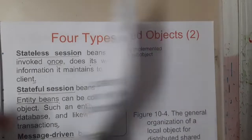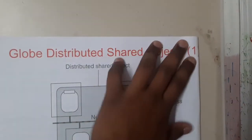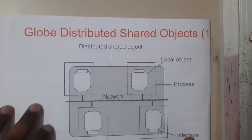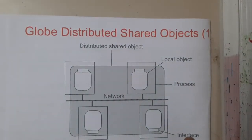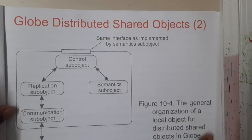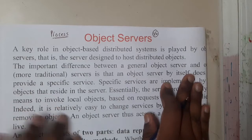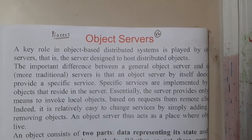After EJBs we have Globe, but there isn't much proper theory available — even in the PPT and textbook, only diagrams are provided and the definitions are not very clear, so you can just go through the flow diagram. In the next lecture we will be discussing about object servers. Thank you, thanks for watching.